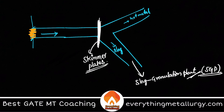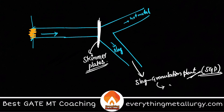The slag is taken to the slag granulation plant (SGP). Here, very high pressure water jets are used to cool the liquid slag into tiny slag particles that look like sand. These particles are rich in MgO and CaO, making them useful for cement production — this slag is taken for production of slag cement.